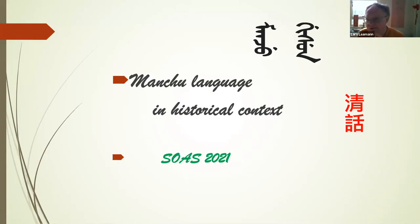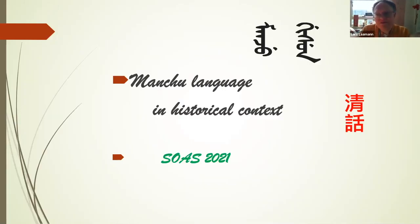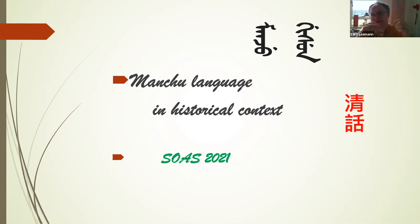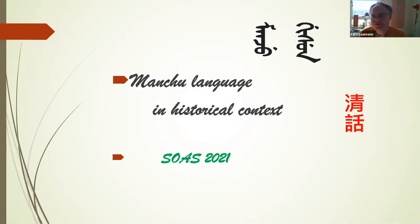You read Manchu in columns going from left to right. You read Chinese in columns going from right to left. That means that if you have documents that are in two languages, they meet in the middle — Manchu flowing from the left end of the scroll, Chinese from the right. In the middle, you often have a big seal, a picture, or signatures — anything that makes the document an official document.